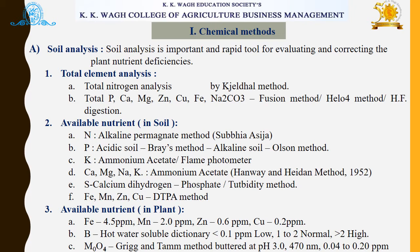Next is available nutrients in plants. Iron, manganese, copper, and boron with their concentrations in the plant are examined. Specifically, boron is determined by hot water soluble distillation. The concentrations for these nutrients are given in the reference tables. This covers the soil analysis section.